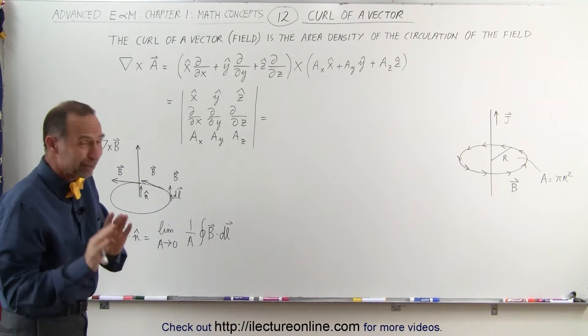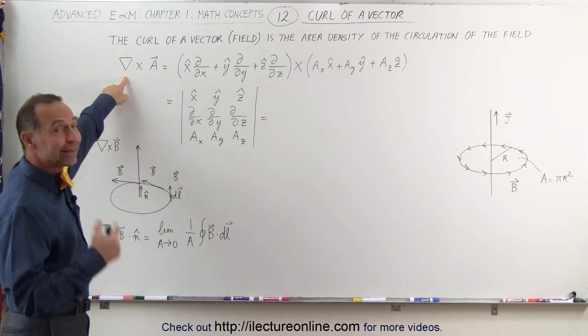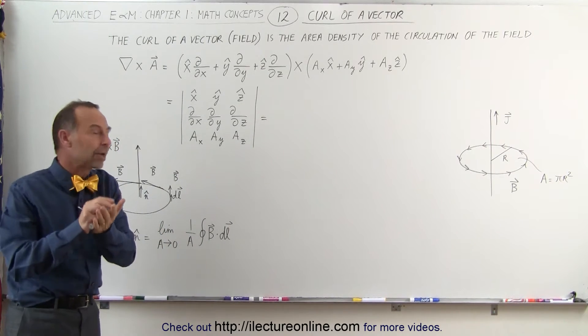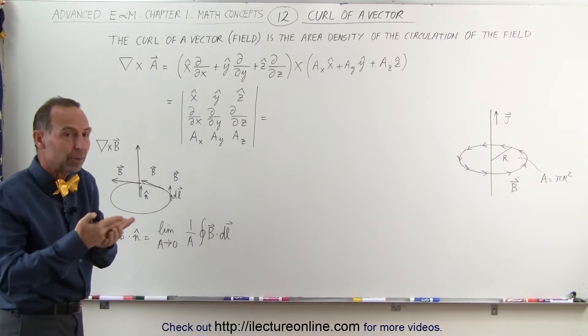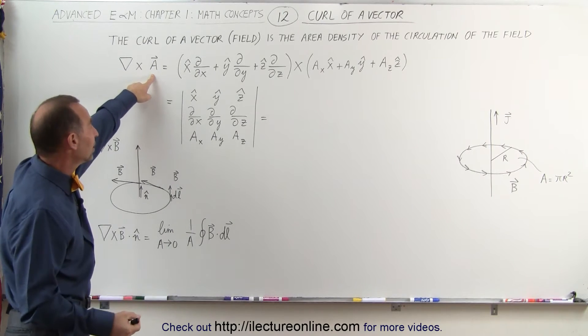But mathematically, we'll get to the explanation in just a moment, but mathematically, it's again the DEL operator multiplied times a vector. But instead of having a dot product here, we have a cross product. So there's actually a cross multiplication between the DEL operator and the vector or the vector field.